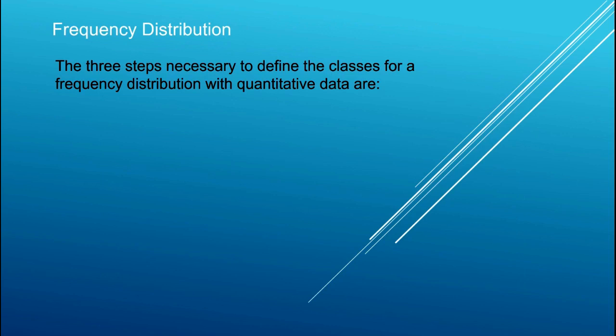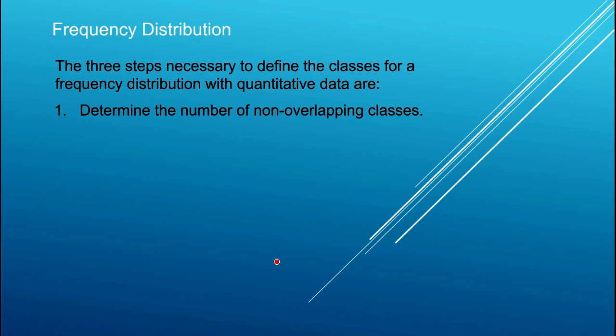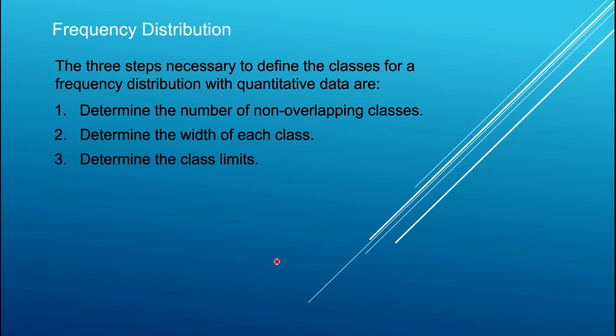The three steps necessary in defining classes for a frequency distribution with quantitative data are as follows. First, determine the number of non-overlapping classes — this is often a matter of trial and error. Second, determine the width of each class, and I recommend keeping the width constant. Third, determine the class limits, meaning the lower end and upper end of each class.